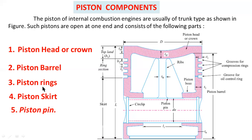The third part is piston rings. The grooves on the piston barrel are used for arranging the piston rings. Piston rings are broadly classified into compression rings and oil control rings. You can observe three grooves for compression rings and one groove for the oil control ring, with a small hole on the inside of the piston.